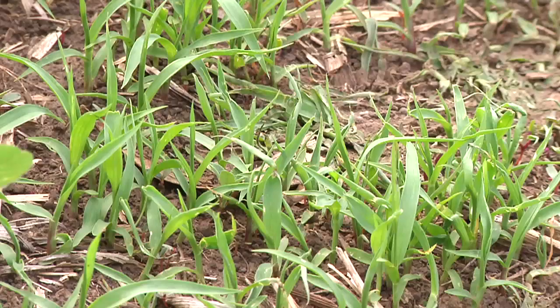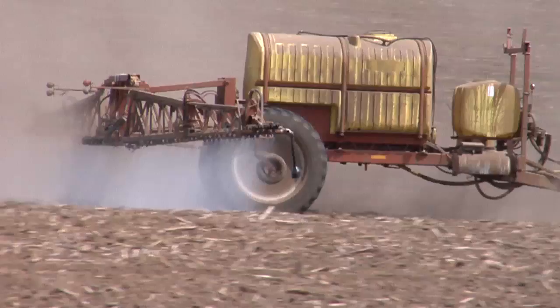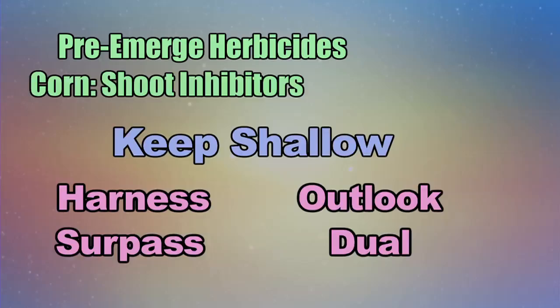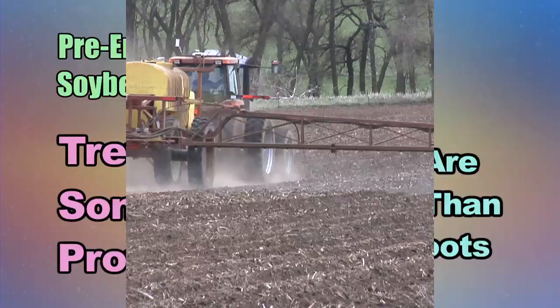With pre-emerge herbicides we're talking about either shoot inhibitors or root inhibitors. In a lot of cases we're talking about little grass plants or small-seeded broadleaves that are going to germinate in that top inch of soil, sometimes even the top half inch. So we want to keep our shoot inhibitor pre-emerge herbicides relatively shallow. The shoot inhibitors are mainly corn herbicides like Harness, Surpass, Outlook, and Dual. On the other hand, many of the soybean products — the yellows, the DNAs, Treflans, Sonalans, and Prowls — those products are root inhibitors.